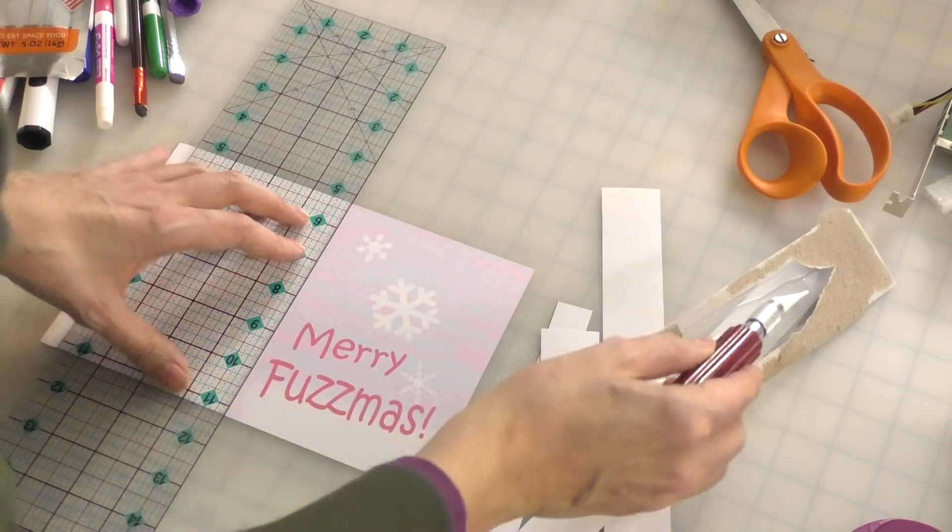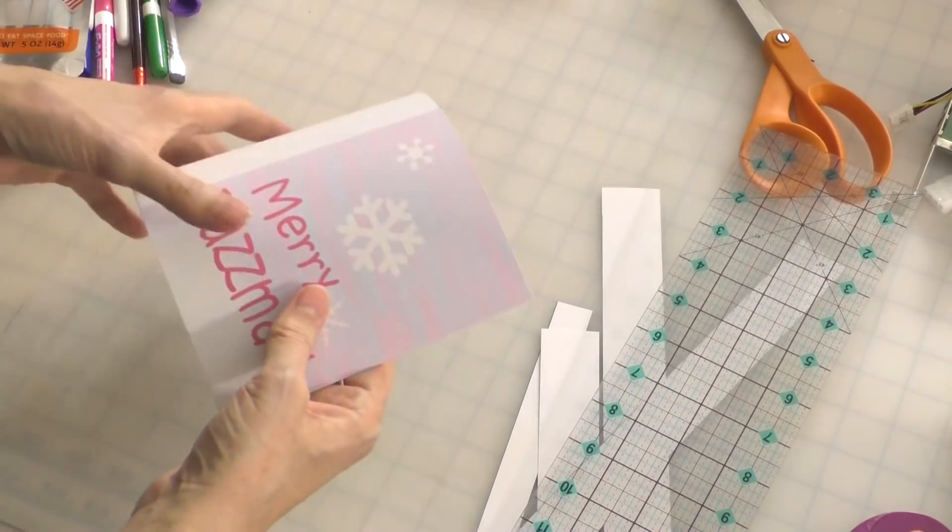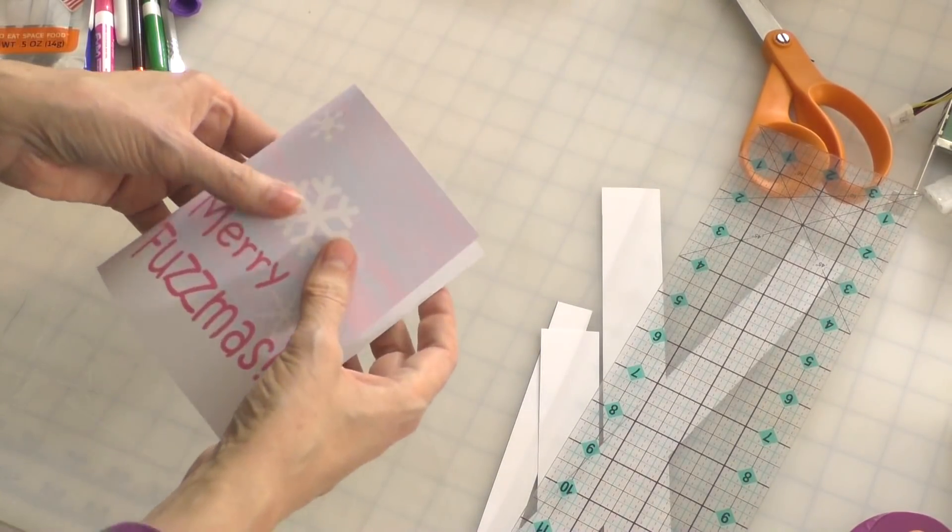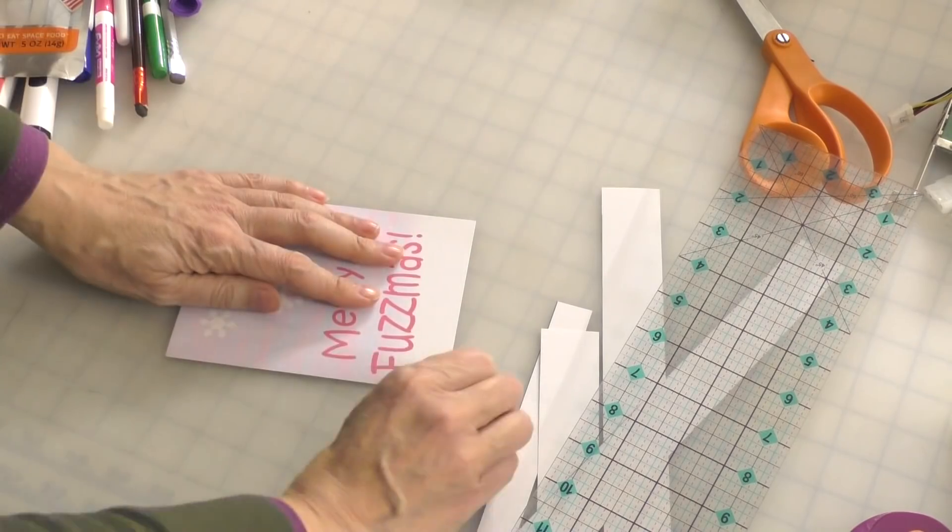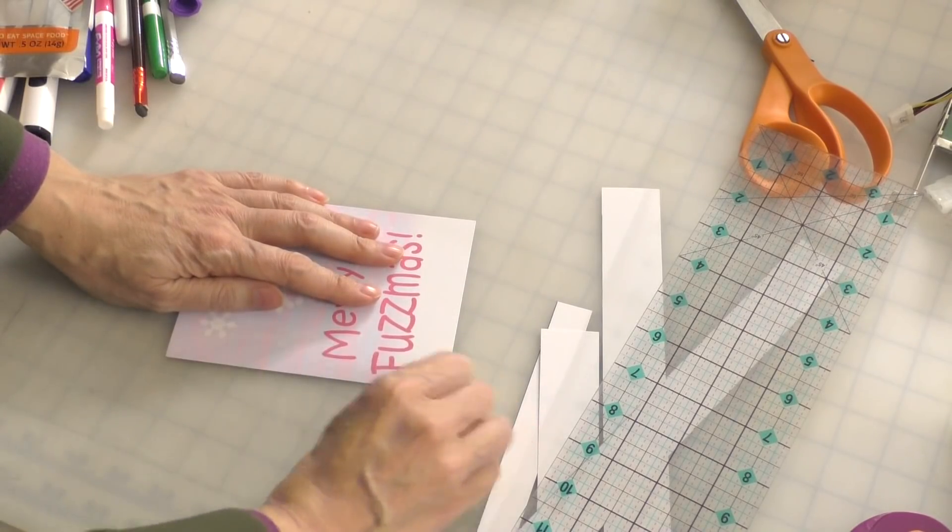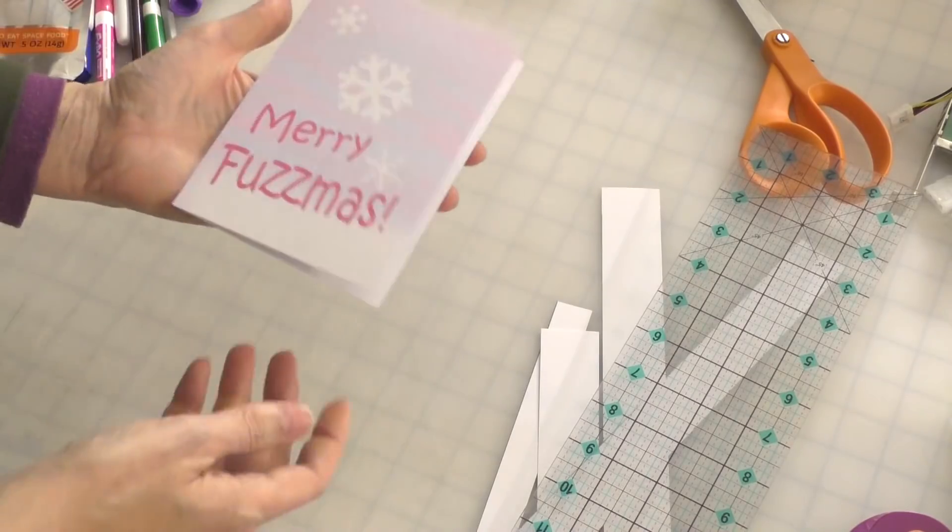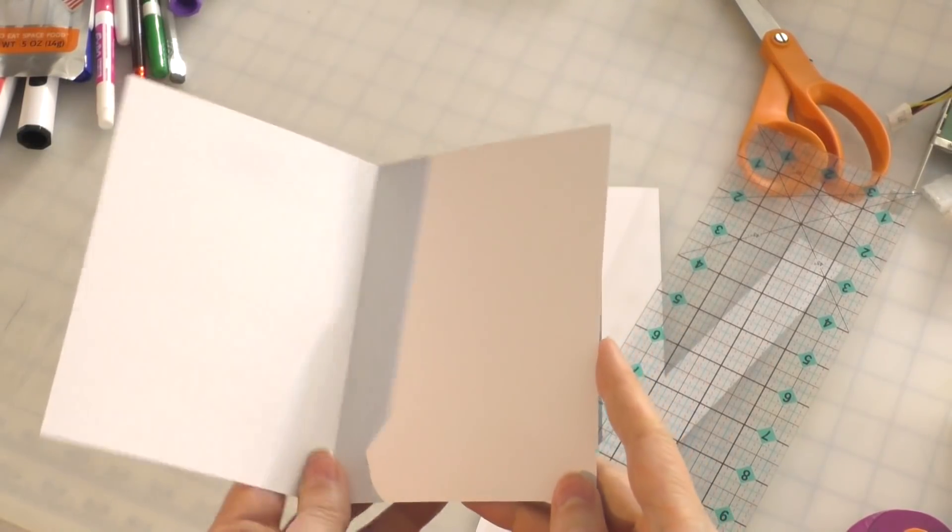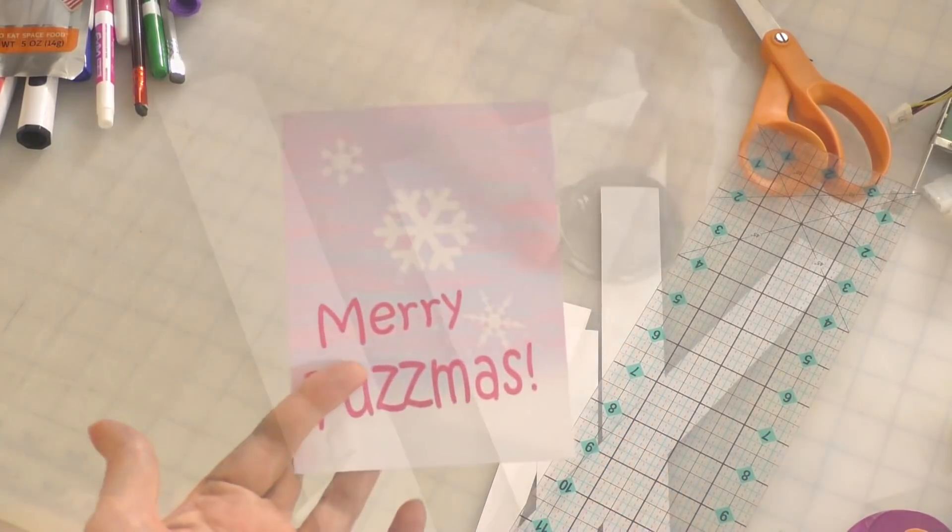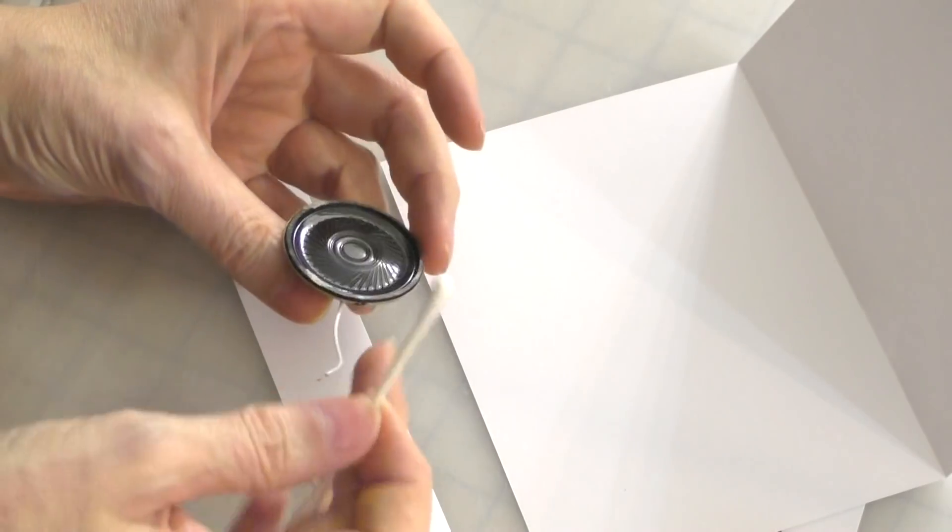In order to get it to fold without crunching it, you just take an exacto knife and very lightly score the top side. Then as you gently fold it, the crease will fold through and you'll get this really nice, clean, crisp fold which you can burnish. So that was it, I made the card.